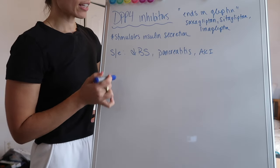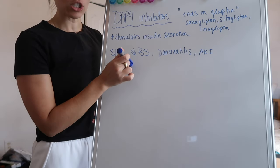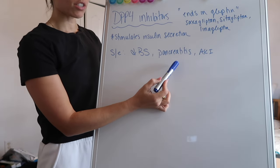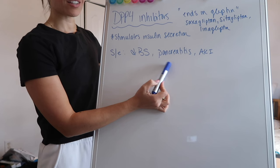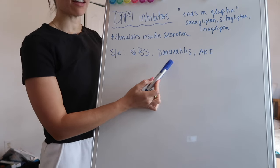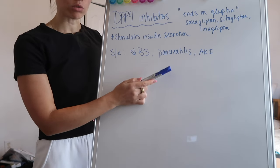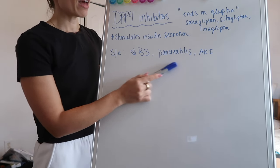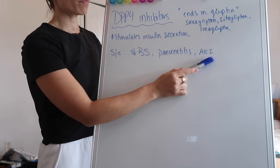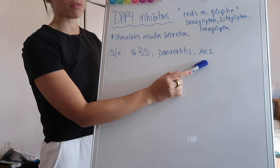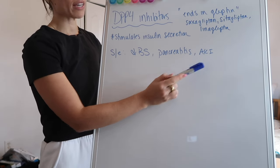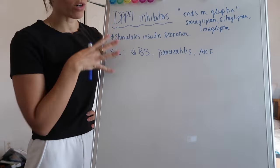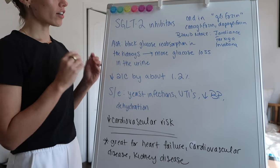Use DPP-4 inhibitors very cautiously in a patient who has a history of pancreatitis, or if the patient has any risk factors for pancreatitis. They can also cause acute kidney injury, so just make sure that you are being careful with the prescribing. But DPP-4 is very similar to your GLP-1s.